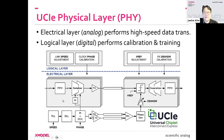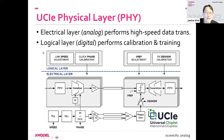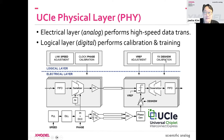The electrical layer can operate at different data rates, transmit data and clock at different phases, adjust the reference voltage used to distinguish ones and zeros, and calibrate skew between different data lanes. All those parameters are calibrated and controlled by the logical layer, which is a large set of digital finite state machines. The UCIe physical layer is thus a big collection of analog and digital circuits that interact seamlessly.